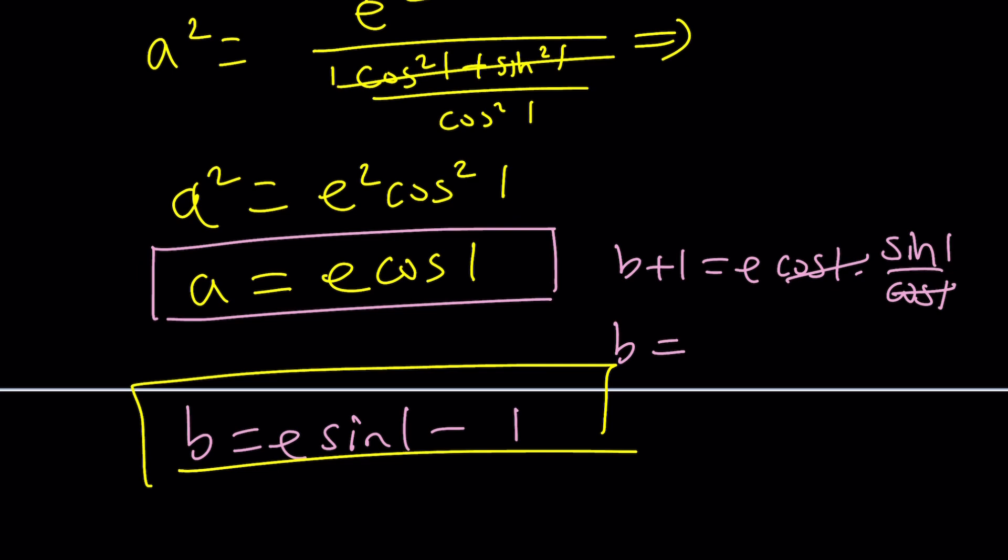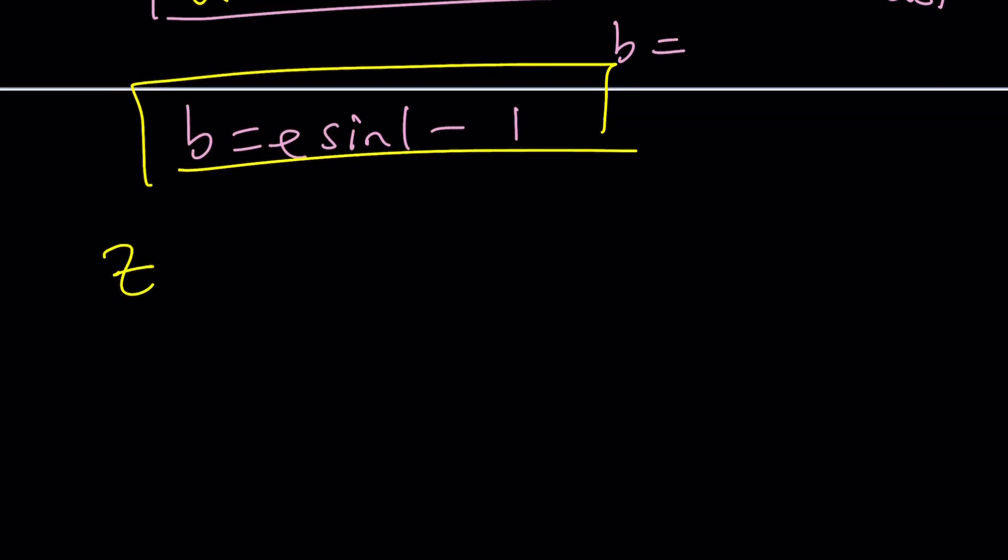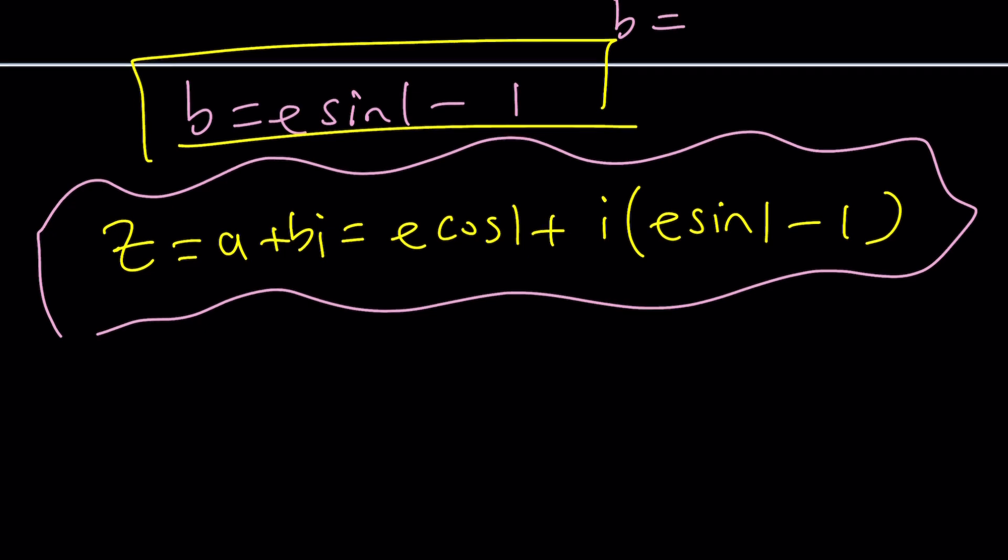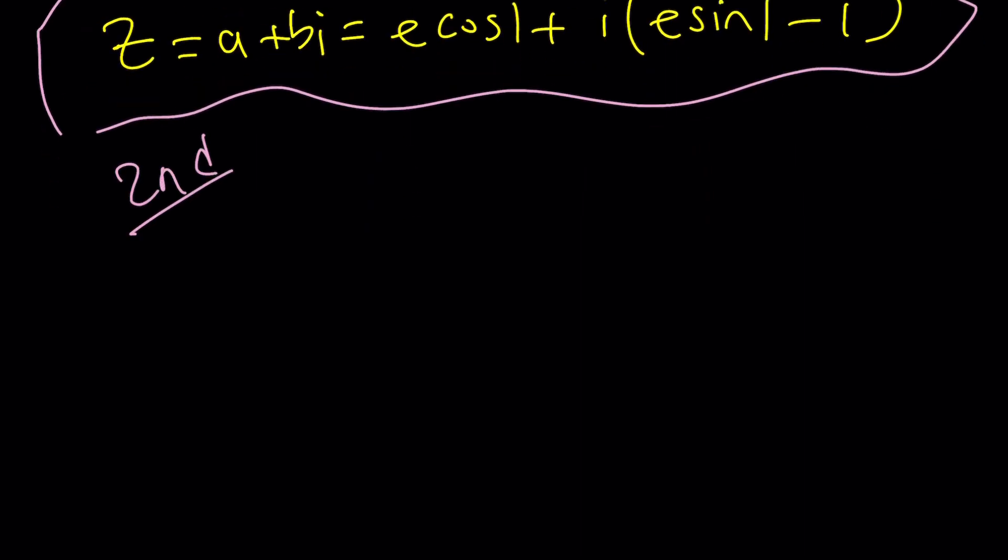Let's go ahead and put it together. So now our z is going to be a plus bi, which is E cosine 1 plus i times E sine 1 minus 1. So that's the answer. That's interesting. But let's go ahead and take a look at the second method, because I think the second method you'll like better. It's probably more interesting.